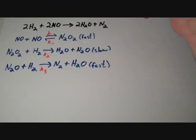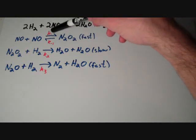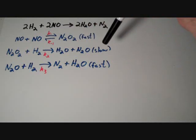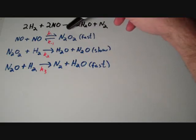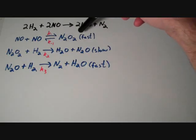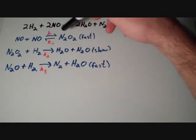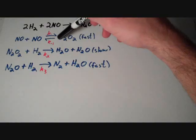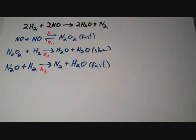So, in the first step of the mechanism, we have 2NO molecules colliding together to form an N2O2 molecule. And the rate constant of that elementary step is K1. Simultaneously, we have an N2O2 molecule decomposing into 2NO molecules. And the rate constant for the reverse reaction is K-1.